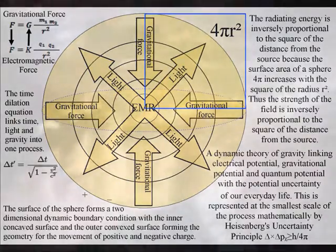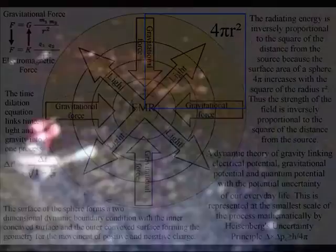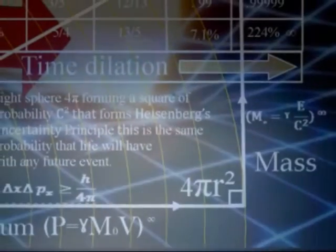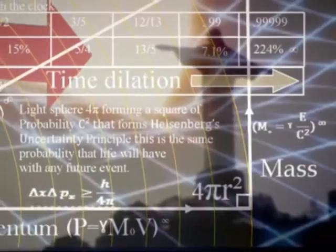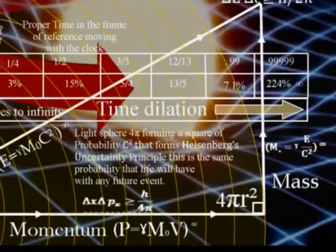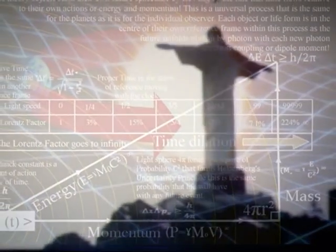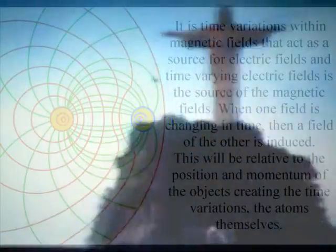Photon energy slows up the rate that time flows forming a vortex in space relative to the energy and momentum of each object. Mass will increase relative to this with the time dilation of Einstein's relativity being part of this universal process. There is no action at a distance in this theory, just as in Einstein's theory of general relativity, the gravitational field propagates at the speed of light with the electric and magnetic fields.